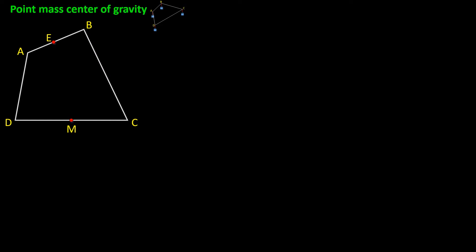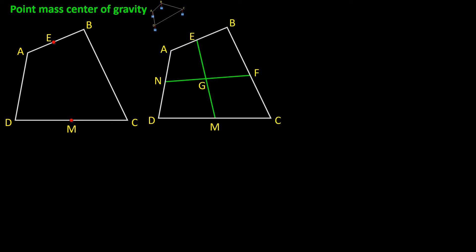So the first case is point mass center of gravity. Let us consider quadrilateral ABCD. Because we assume that the masses are equal, the center of gravity of AB would be the midpoint of AB, which is point E. The same way, the center of gravity of masses connected at C and D is at the midpoint of CD, which is M. So the total center of gravity of this quadrilateral would be somewhere along EM. The same way, the total center of gravity is somewhere along NF, where N is the midpoint of AD and F is the midpoint of BC. So the only point that fulfills these conditions is the intersection of these two lines, and this point is the point mass center of gravity.